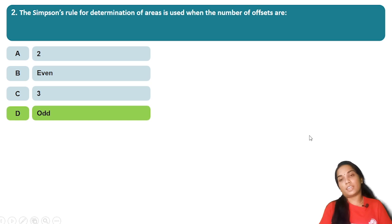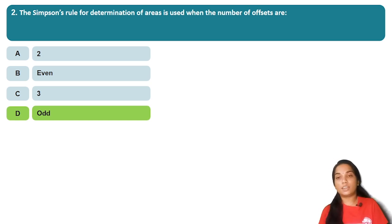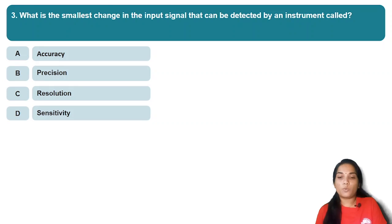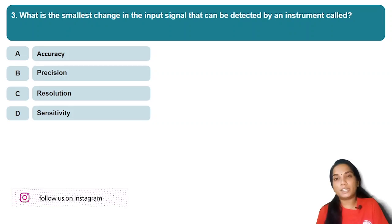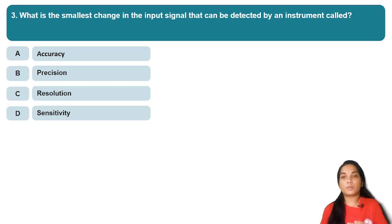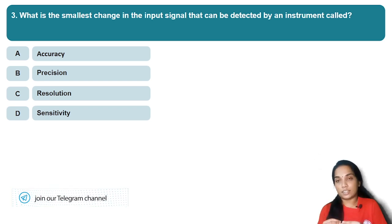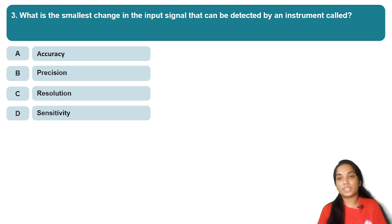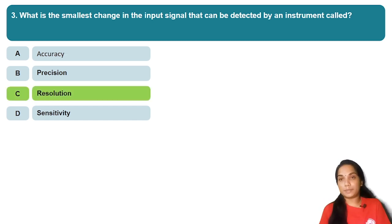For an even number of ordinates, you have to apply the Trapezoidal rule. If you have a Prismoidal correction, apply the Prismoidal correction to get accurate results.